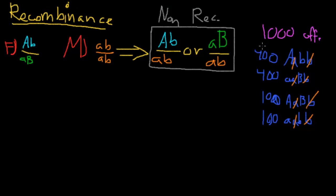So how do we calculate the recombinance frequency? We know that these are non-recombinant genotypes. We already established that - big A little B, little A little B, or little A big B, little A little B. So we know that these two are non-recombinant. So that means these two are our recombinant, right?